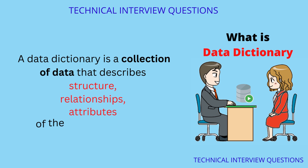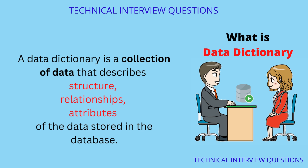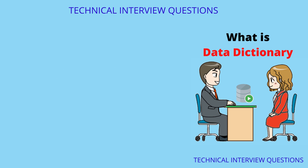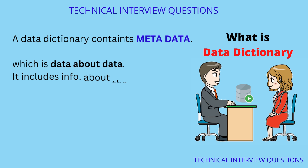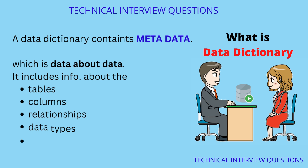What is a data dictionary in DBMS? A data dictionary is a collection of data that describes the structure, relationships, and attributes of the data stored in the database. The data dictionary contains metadata, which is data about data.